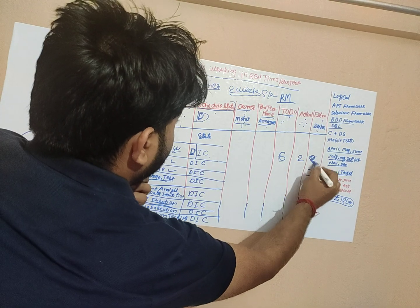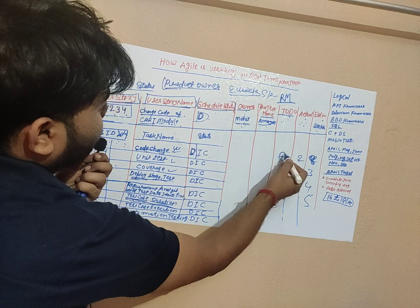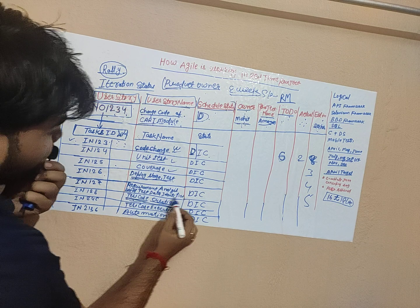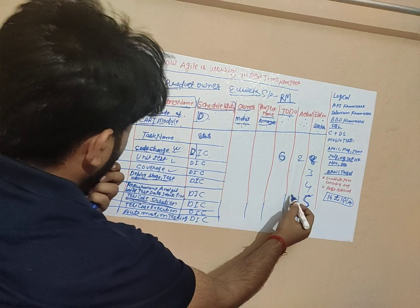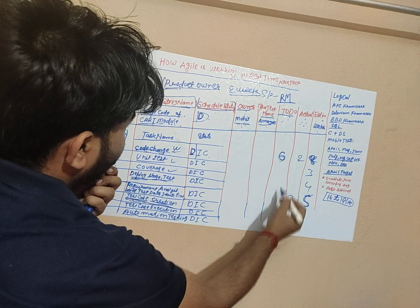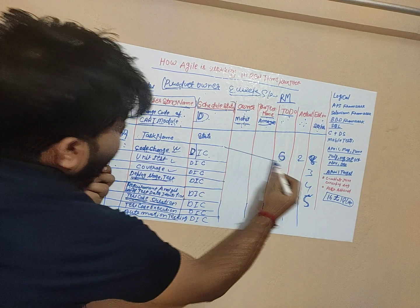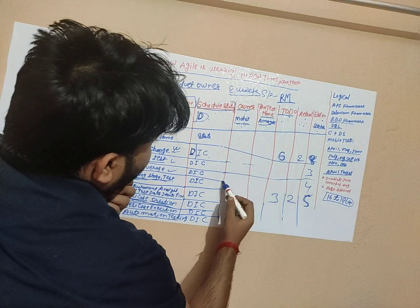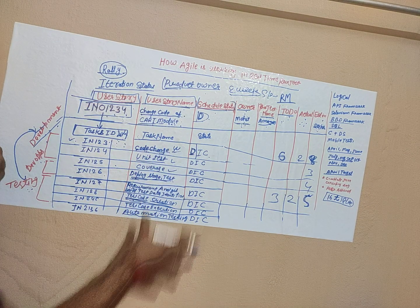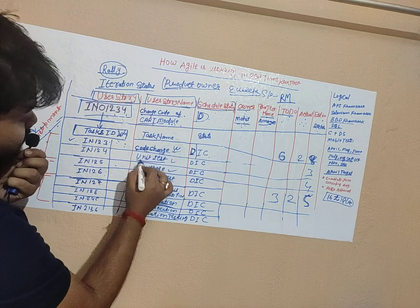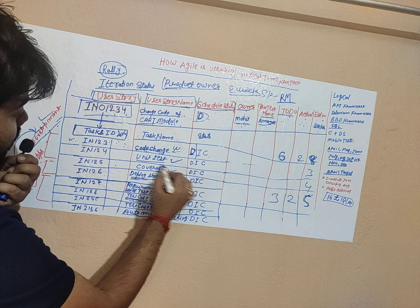For example, the developer's estimated task for code changes is eight hours. Today they did two hours, so six hours remain. Similarly the tester has five hours of work today, completed two hours, so three hours are still due. Daily we update Rally for time tracking like this.